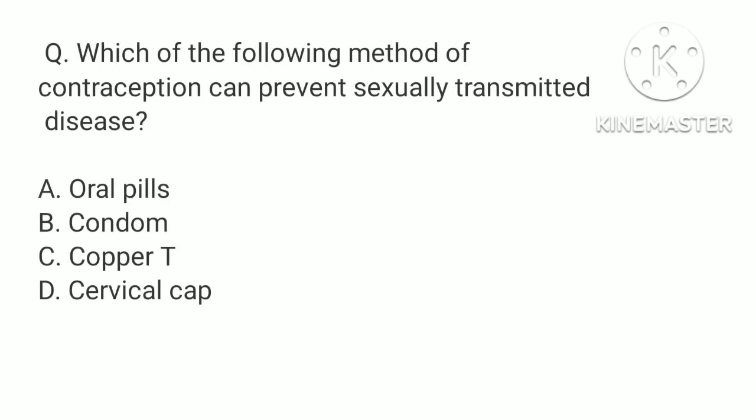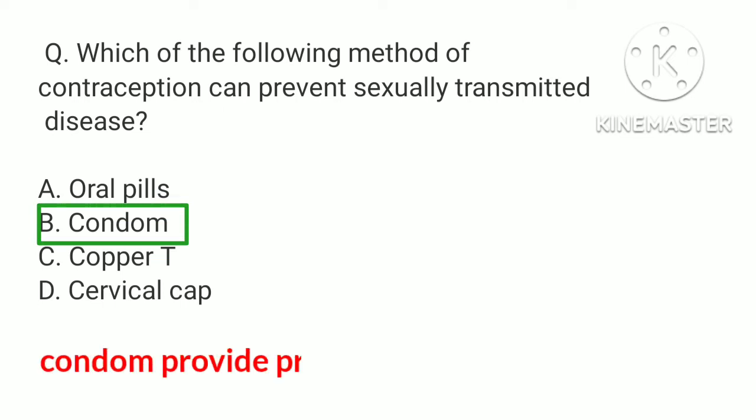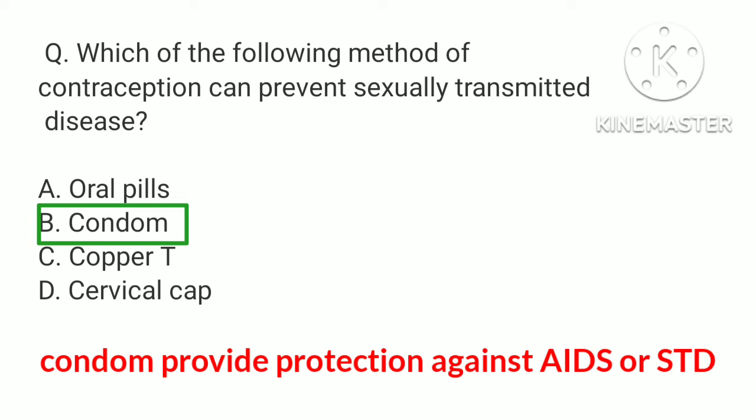Which of the following methods of contraception can prevent sexually transmitted disease? a. Oral pills, b. Condom, c. Copper T, d. Cervical cap. The correct answer is b. Condom. Among these, only condoms provide protection against AIDS or sexually transmitted diseases by preventing the contact of infected secretions between partners.